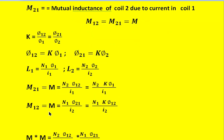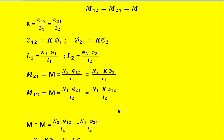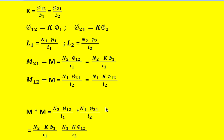Similarly, M12, which also equals M, is equal to N1 times phi21 divided by I2. Substituting phi21 with k times phi2, M12 becomes N1 times k times phi2 divided by I2. Multiplying M12 and M21, whose values are both equal to M, gives M squared equals N2 times phi12 divided by I1 times N1 times phi21 divided by I2.